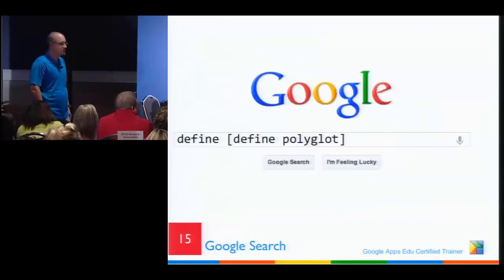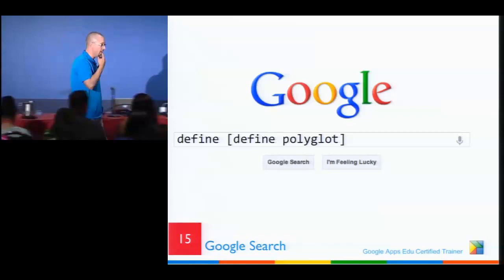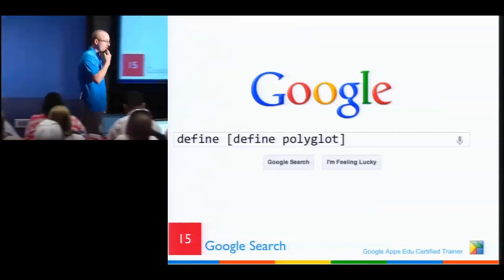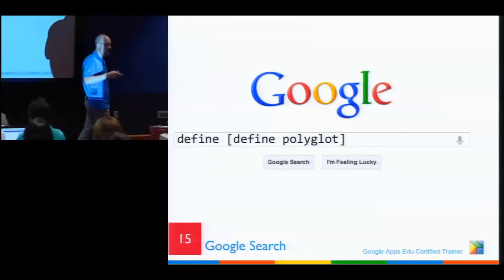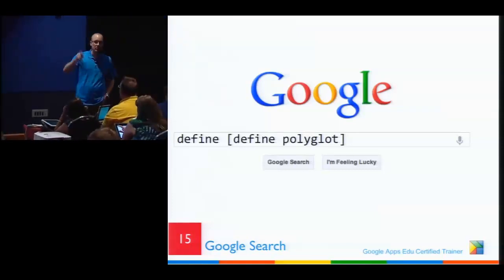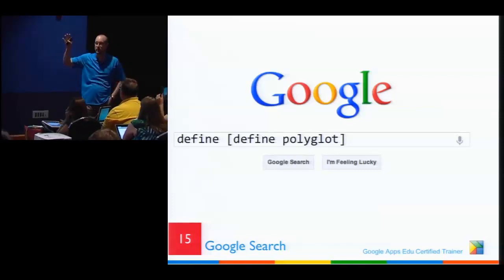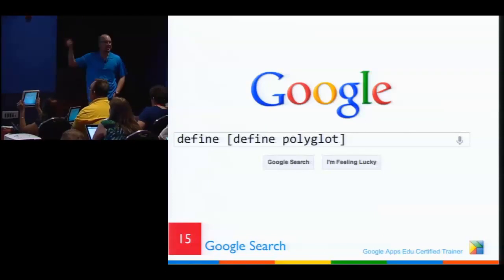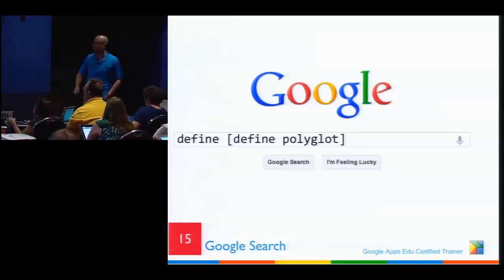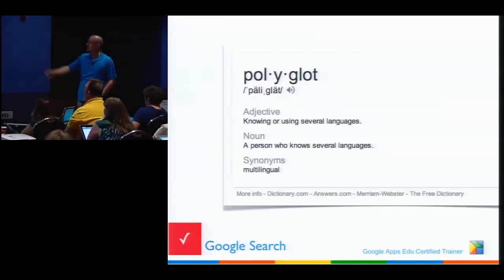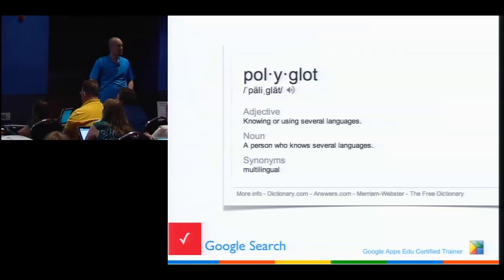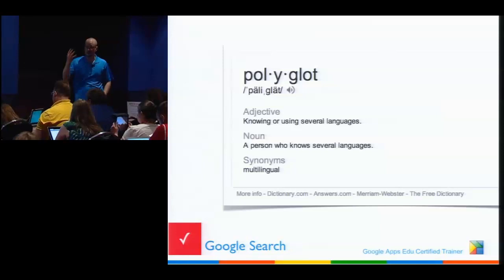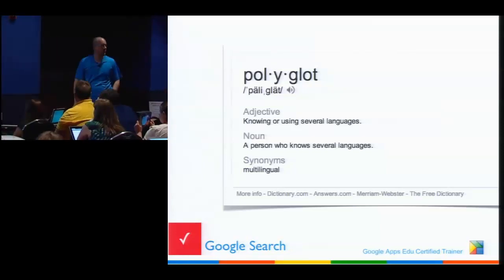Definitions: how many of your students, when they hit a tricky word, actually get up and go to the dictionary? None. In your browser, just type 'define' and then whatever the word is — for example, 'define polyglot' — meaning knowing or using several languages. See that microphone or speaker symbol? Press it and it'll pronounce the word for you. So if you ever wonder how to pronounce something, just go to Google.